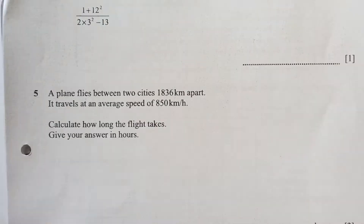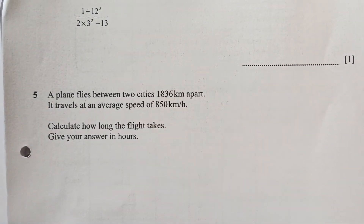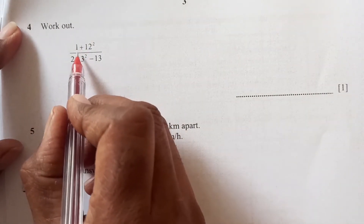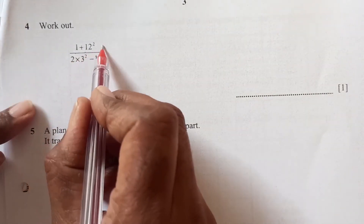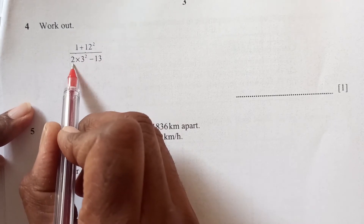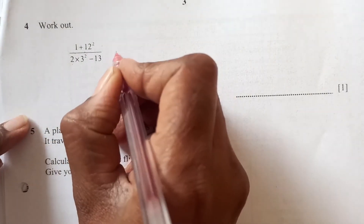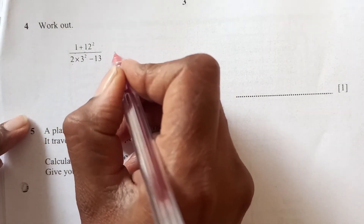Draw a ring around the value of digit 4 in the number 356.354. Counting decimal places: 3 is tenths, 5 is hundredths, 4 is thousandths — so the value is 4/1000.